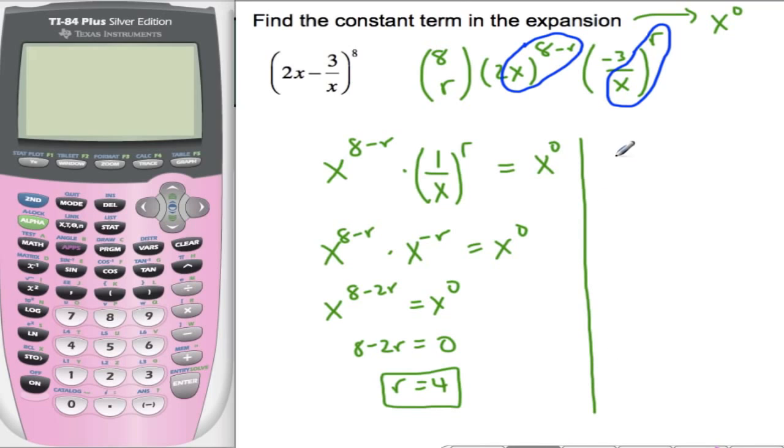Okay, so I'll just simplify everything. So I have 8 choose 4, 2 to the 8 minus 4, and negative 3 to the 4. You might be asking yourself, why am I leaving out all the x's? Well, I know already that the x's will cancel, x to the 0. I already know when r is 4, all the x's will cancel. So 8 choose 4.